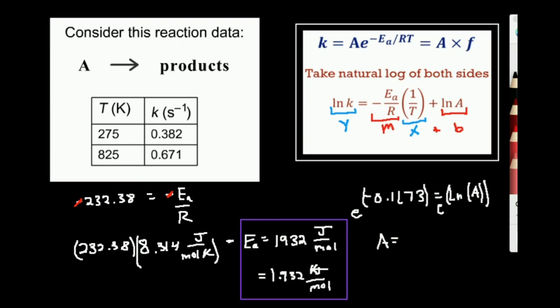Let's do that. I'm going to plug that in. Exponential negative 0.1173. And I get that the collision factor or Arrhenius factor is going to be 0.8893. And that's my answer for this.